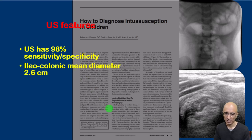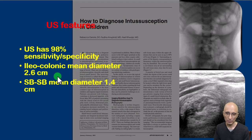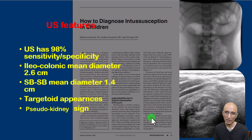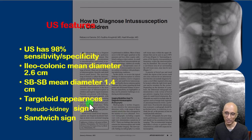Classically, ileocolonic intussusception diameter is much larger; the mean diameter quoted in this paper was 2.6 cm, whereas small bowel to small bowel intussusception diameter is smaller, with a mean of 1.4 cm. Depending on the plane of acquisition, the intussusception can appear like a target or donut, a pseudo kidney on the longitudinal plane, or a sandwich appearance as seen in our patient.